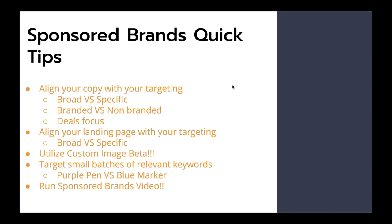Utilize custom image beta. This has been rolled out for around eight months — originally only on the product detail page, potentially mobile initially. Now it's been rolled out to the headline search ads. In the last few weeks we've seen a major push with custom image beta being in the headline search ad. These are fantastic because they increase click-through rate, great opportunity to cross-sell your products with an amazing lifestyle image and potentially make them holiday-related.